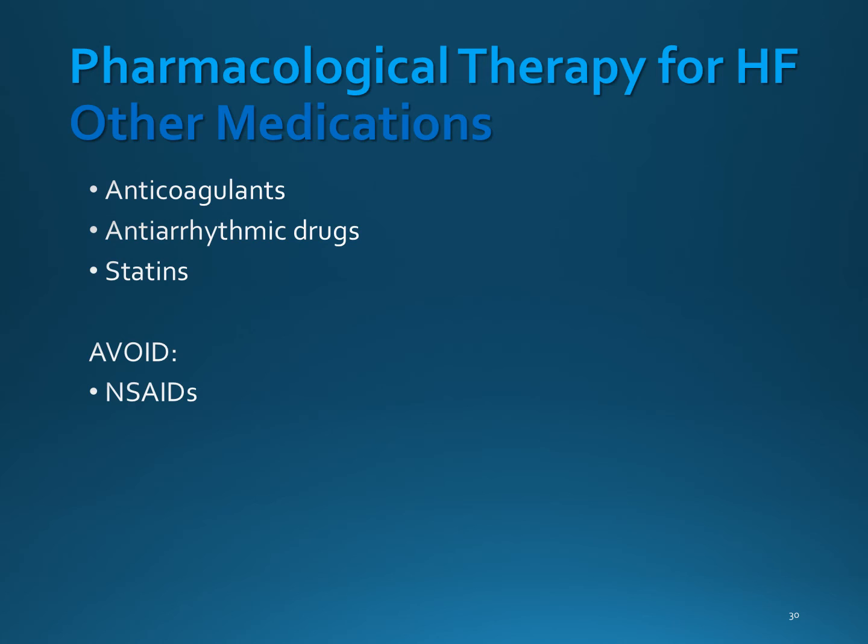Anticoagulants may be prescribed, especially if the patient has a history of atrial fibrillation or a thromboembolic event. Anti-arrhythmic drugs may be prescribed for patients with dysrhythmias, along with evaluation for an implantable cardioverter defibrillator, an ICD. Medications to manage hyperlipidemia, such as statins, are routinely prescribed, and patients need to be taught to avoid NSAIDs such as ibuprofen, because they can decrease renal perfusion, especially in older adults.